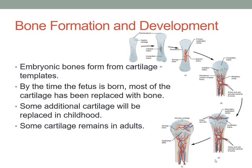With bone formation and development, you need to have the general concept. Embryonic bones form from cartilage templates. This diagram is in your book and shows a circular diagram starting at the top as an embryo. As the embryo and fetus grow, and then as we are born, you can see how the bones change. By the time the fetus is born, most of the cartilage has been replaced with bone. Some additional cartilage will be replaced in childhood, and some cartilage remains in adults.